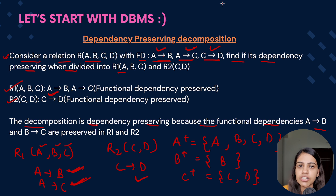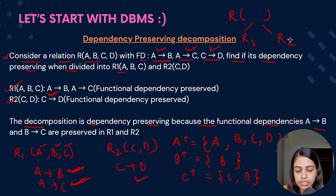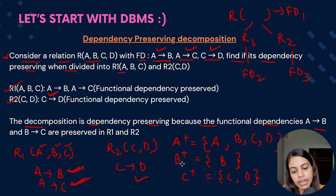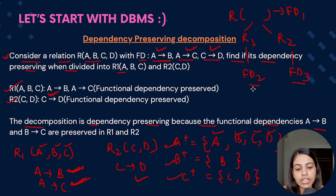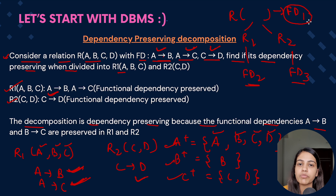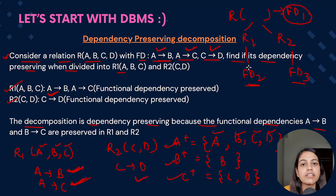To determine whether a given decomposition is dependency preserving: note down the original relation and its functional dependencies, then note the decomposed tables. For each decomposed relation, find the closure of individual attributes to derive the functional dependencies. Then check whether the functional dependencies derived after decomposition match those present before decomposition. If all original functional dependencies are preserved, the decomposition is dependency preserving.